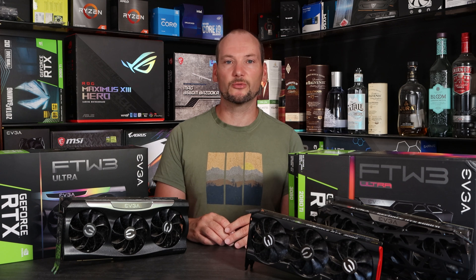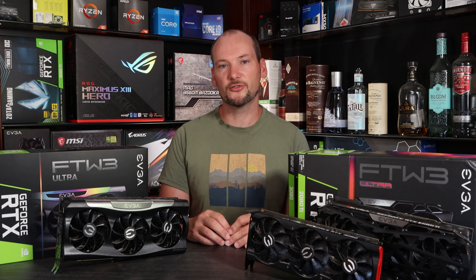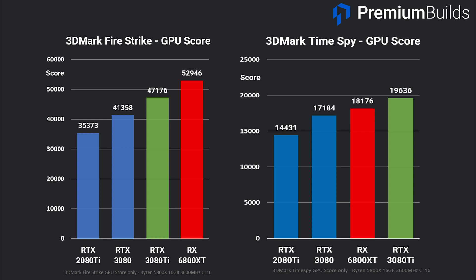Firstly let's take a look at our synthetic benchmark suite starting with 3DMark's Firestrike. Firestrike is the DirectX 11 test and renders in 1080p. The 6800 XT excels in this and the RTX 3080 Ti still can't beat its score, giving away nearly 5,000 points. However it does have a clear margin of performance over the RTX 3080, 6,000 points behind it, and then the RTX 2080 Ti is over 10,000 points behind the RTX 3080 Ti overall. Timespy shows the 3080 Ti leapfrog the RX 6800 XT in this DirectX 12 based 1440p graphics test. It's more representative of current games.